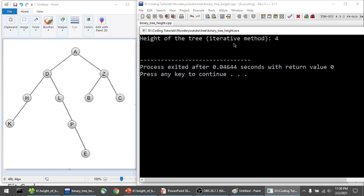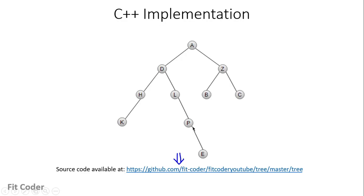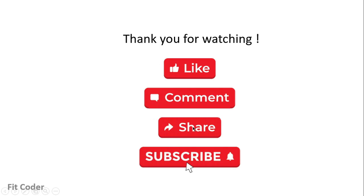The height of the tree using the iterative method is 4, which equals the maximum number of edges that A is apart from any leaf node — A is 4 edges apart from node E. That was all for this video. If you have any doubts or suggestions, please leave them in the comment section below. If you like the content, please like, share, and subscribe. Until next time, this is Sandeep Thapar signing off.